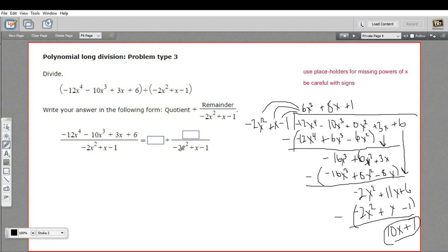That's going to go over this as a fraction. So what goes in here is this part. So this is 6x squared plus 8x plus 1. And then plus our remainder, which is 10x plus 7, over the thing we're dividing by negative 2x squared plus x minus 1. So that is how to do a tricky and difficult polynomial long division problem.